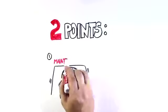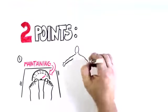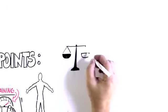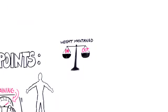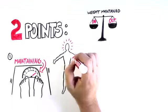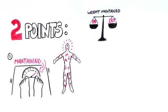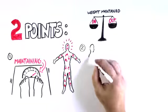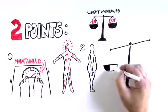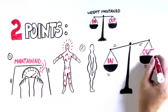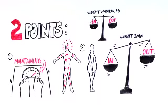One, if you're maintaining your weight, you're doing so because your body is matching your energy intake to your energy expenditure more precisely than you could ever do consciously. So it stands to reason that your system plays a role in doing it for you. And two, people may gain weight not because their energy intake wildly exceeds their energy expenditure, but because of a very slight mismatch between the two.